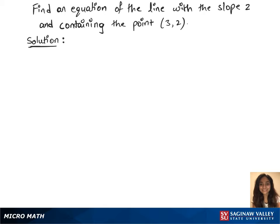To find an equation of the line with the slope 2 and containing the point (3, 2), we'll use the equation of the line formula, which is y minus y1 equals m times x minus x1. We have the values, let's plug them into the formula.